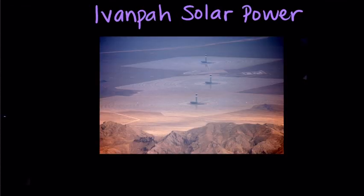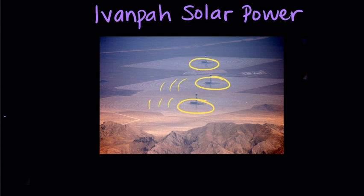The largest CSP in the United States is in the Mojave Desert, very near California's border with Nevada. It's called the Ivanpah Solar Power Facility. You'll see here that there are three sets of concentric circles with mirrors that are reflecting heat energy onto individual towers.